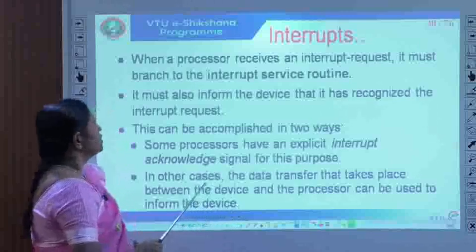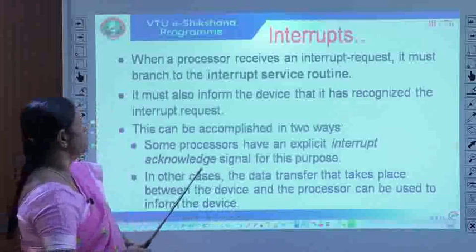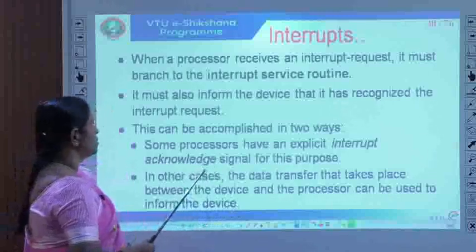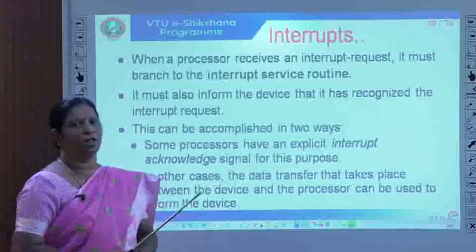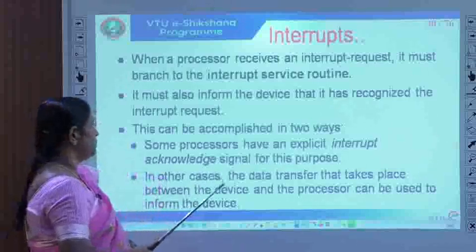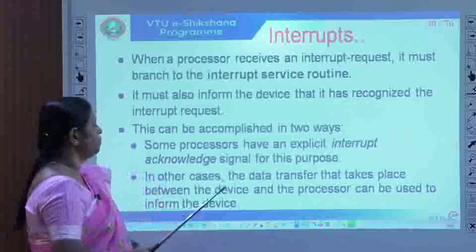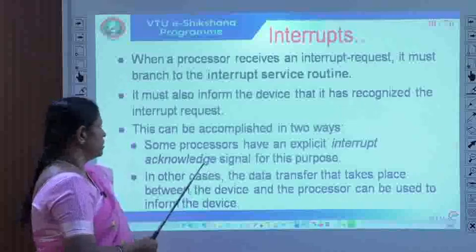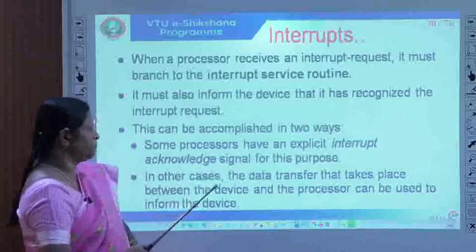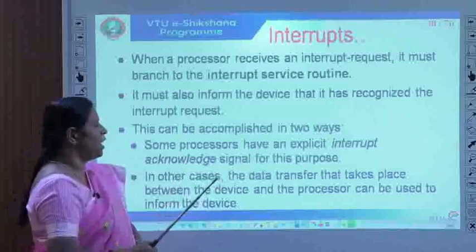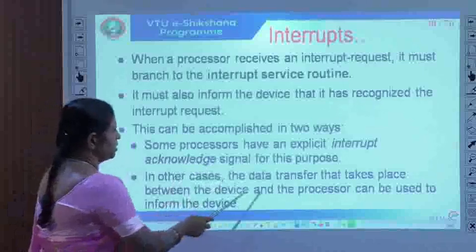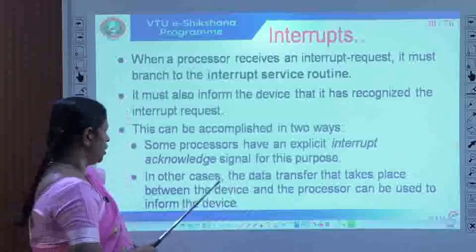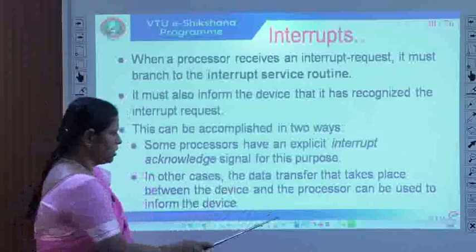When a processor receives an interrupt signal, it must branch to the interrupt service routine and inform the device that it has recognized the interrupt request. This can be accomplished in two ways: some processors have an explicit interrupt acknowledge signal for this purpose; in other cases, the data transfer between the device and processor is used to inform the device.